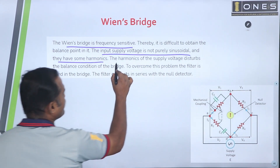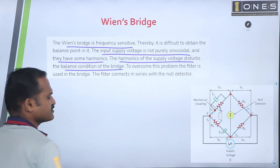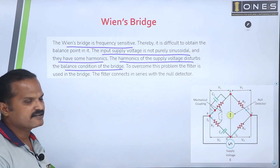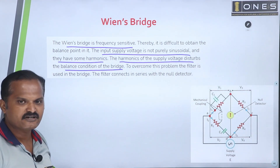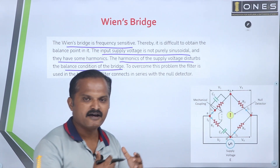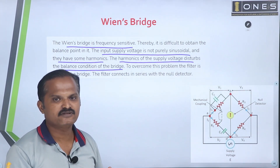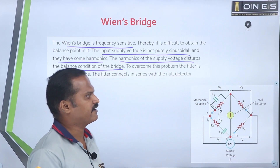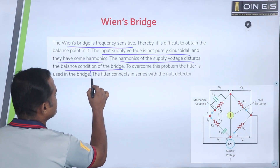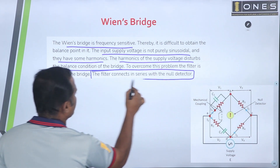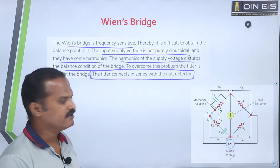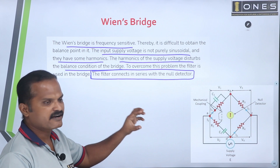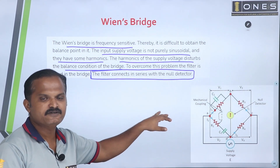The harmonics of the supply voltage disturb the balanced condition of the bridge. We call the balanced condition the null detector with zero deflection. The harmonic content is eliminated using filter circuits, and the pattern is arranged in the balanced condition.